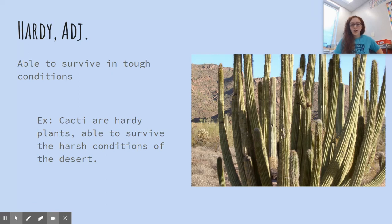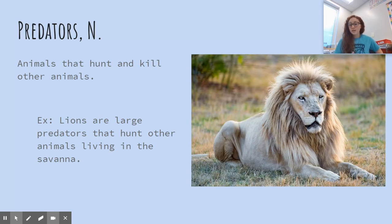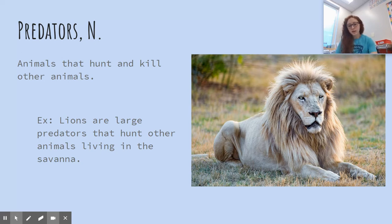Next we have hardy. Hardy is an adjective and it means able to survive in tough conditions. Cacti are hardy plants able to survive in the harsh conditions of the desert. Predators are nouns — animals that hunt and kill other animals. Lions are large predators that hunt other animals living in the savannah.